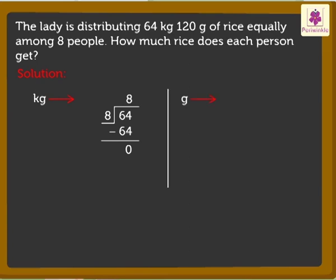Now let's divide 120 grams. First we compare the digits. 1 is smaller than 8, so we consider the next digit, that is 2. Now we get the number 12. Now compare the digits. Here 12 is greater than 8, so we can divide. The nearest product is 8, as 1 into 8 is equal to 8. Place 1 in the tens place in the quotient. Write the number 8 under 12. Now subtract 8 from 12 to get 4.